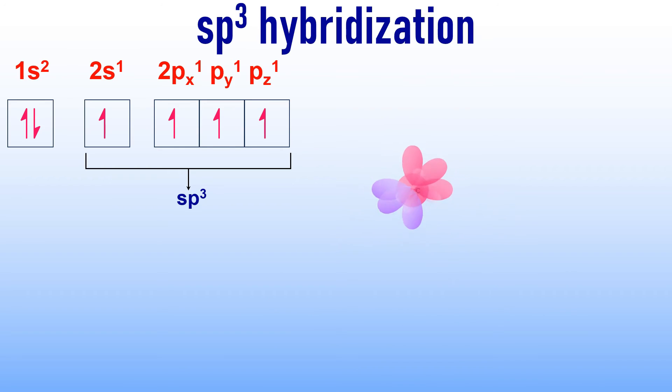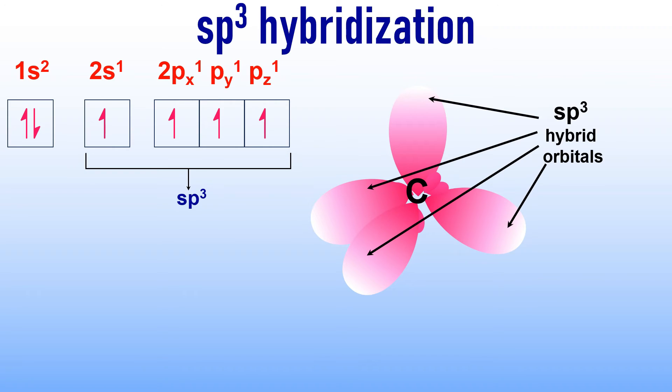With 4 atomic orbitals participating in the hybridization, only 4 sp³ hybrid orbitals are created. These hybrid orbitals are arranged tetrahedrally in space around the nucleus of carbon atom, making angles of 109 degrees with each other. This tetrahedral arrangement is the most stable configuration for 4 orbitals in space.